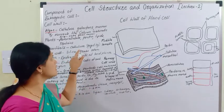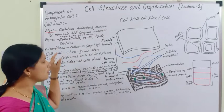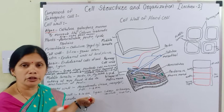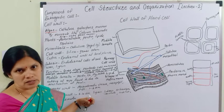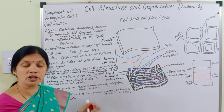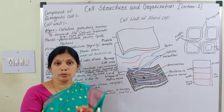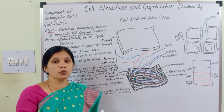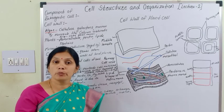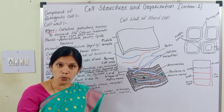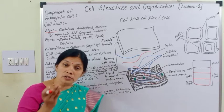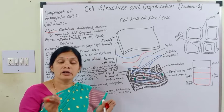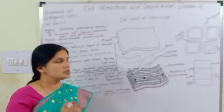These microfibrils are formed from cellulose, and each microfibril is formed from 3000 glucose molecules. These microfibrils, which are formed from cellulose, give rigidity to the cell wall. Each microfibril is formed from 3000 glucose molecules and gives rigidity to the cell wall.